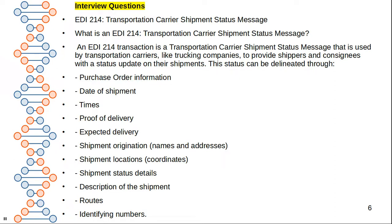Now for some interview questions related to EDI 214. What is an EDI 214 Transportation Carrier Shipment Status Message? An EDI 214 transaction is a transportation carrier shipment status message used by transportation carriers like trucking companies to provide shippers and consignees with status updates on their shipments. This can include purchase order information, date of shipment, time, proof of delivery, expected delivery, shipper names and addresses, shipment location, status details, shipment description, routes, and identifying numbers.